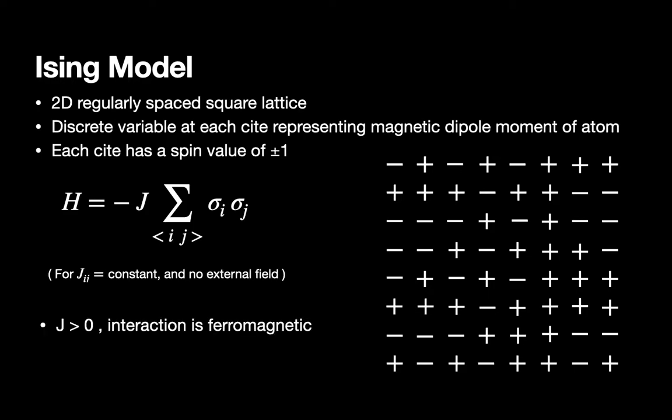If we take the interaction term J to be positive, in other words, a ferromagnetic system, then this implies that the more sites which have the same spin, the more the system energy would decrease. In this case, when all of the spins are the same, that being either all plus 1 or all minus 1, the system is in its lowest possible energy configuration.